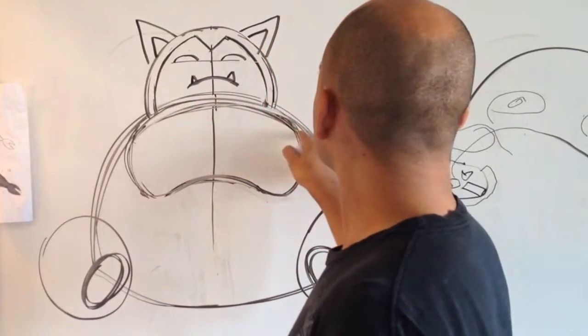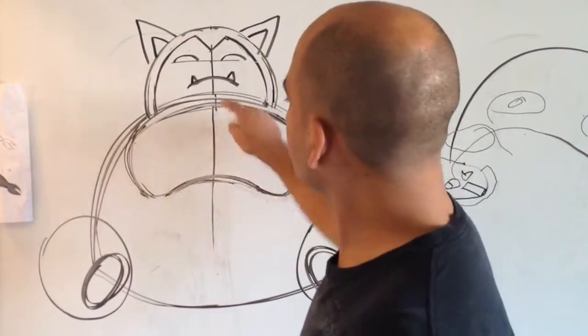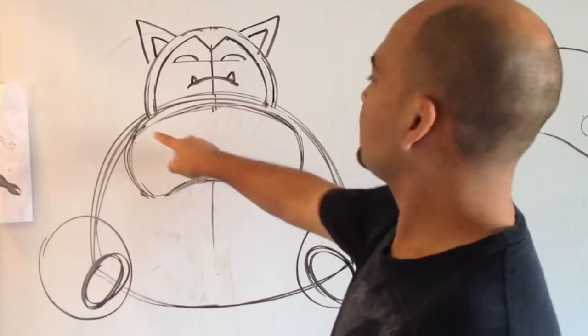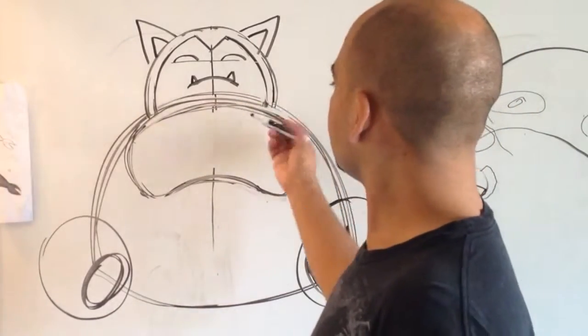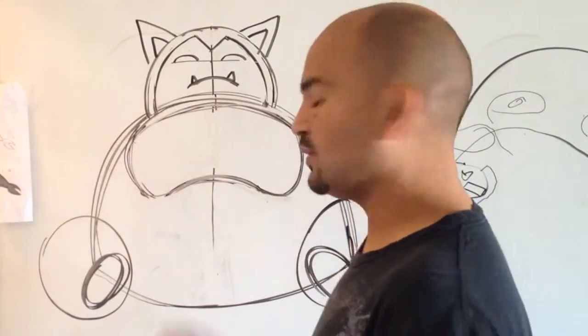So, on some of the pictures that I've seen of Snorlax, this chest thing that he's got here, sometimes it goes all the way over up to the tippy top of his round thing there. And sometimes it doesn't. So, it's up to you what you want to do.